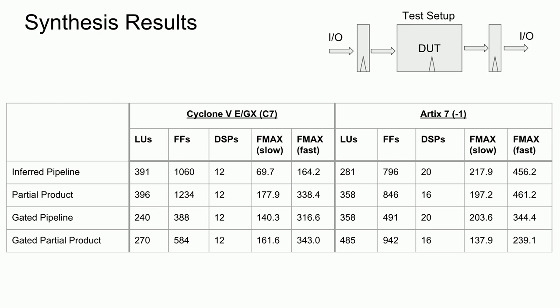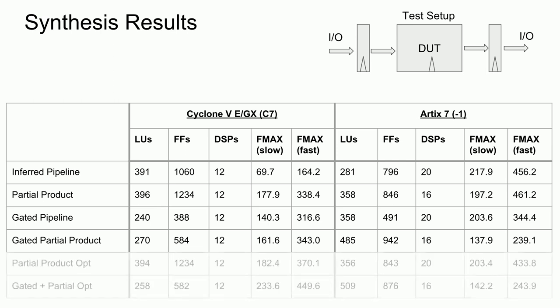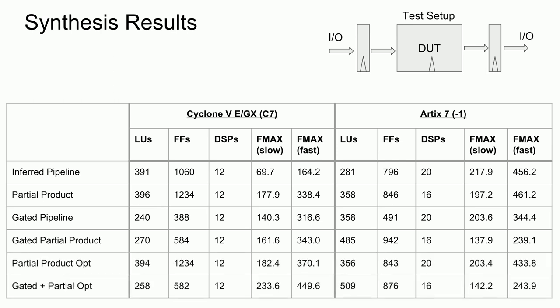There was one more option that could still be done, which was to reduce the size of the adders in the partial product implementations. The first stage of the pipeline only needs to use 96-bit adders instead of 128-bit ones. This means fewer resources could be used. The results here were a bit surprising, with the additional architecture changes being more efficient for the Cyclone 5, and the original inferred pipeline being more efficient for the Arctic 7.